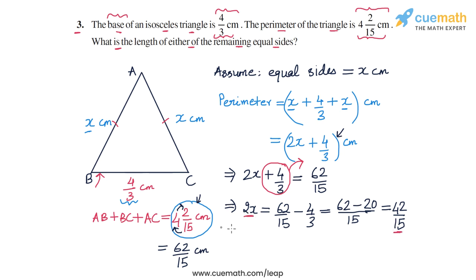And now we have the equation 2x is equal to 42 by 15. So now we divide both sides by 2. So we will get x on the left side and on the right side, we will get 42 by 15 divided by 2. So 42 by 2 is 21, and 21 and 15 also have a common factor of 3. So we get 7 in the numerator and 5 in the denominator. So x is equal to 7 by 5.